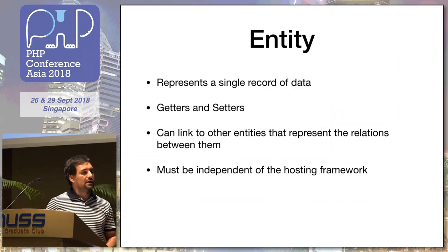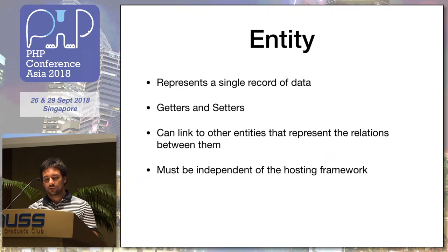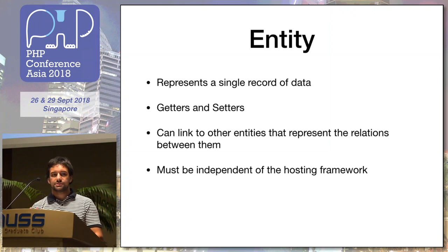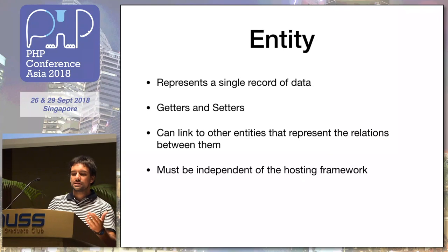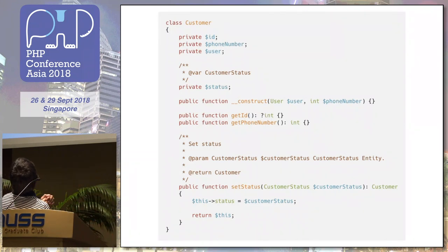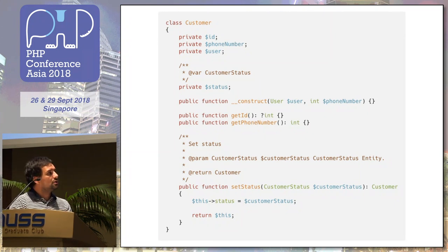Starting with the parts of the stack — the first one is the entity. The entity only represents a single record of data. It's not a table or a database illustration — it only holds the information and the description of the data we are using. This part doesn't include anything from the framework; it's just a simple POSO class. For example, for a customer, we can see it's only keeping the data in runtime — not saving, not doing anything else.